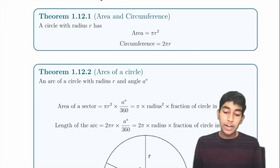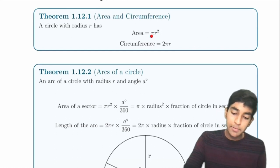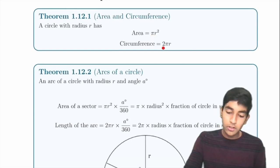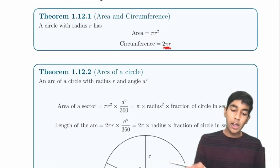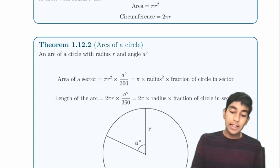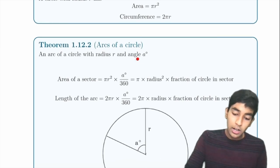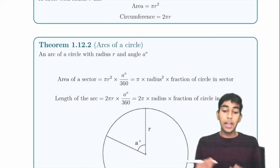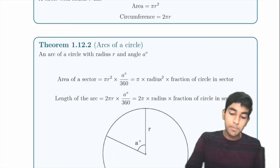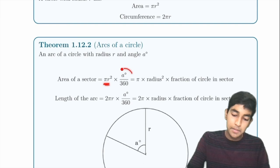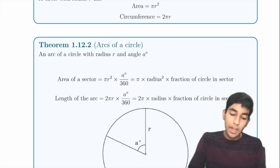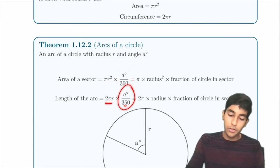Circle area is πr². Circle circumference is 2πr. For an arc of angle A degrees, the area of a sector is πr² × (A/360), and the arc length is 2πr × (A/360).